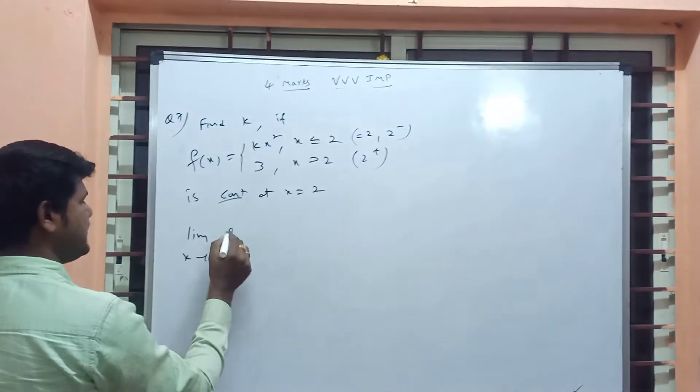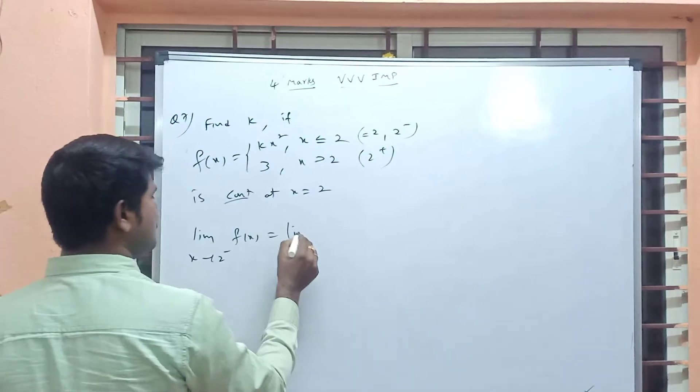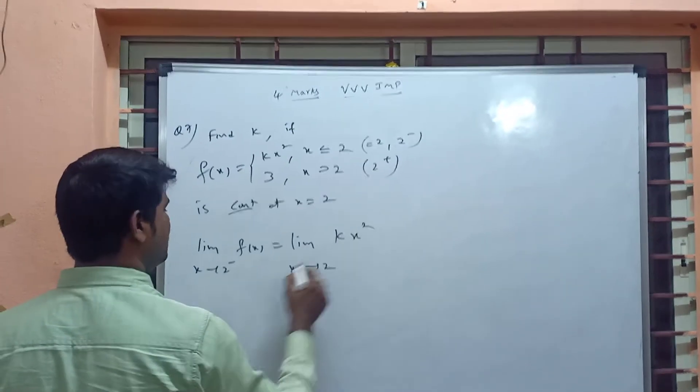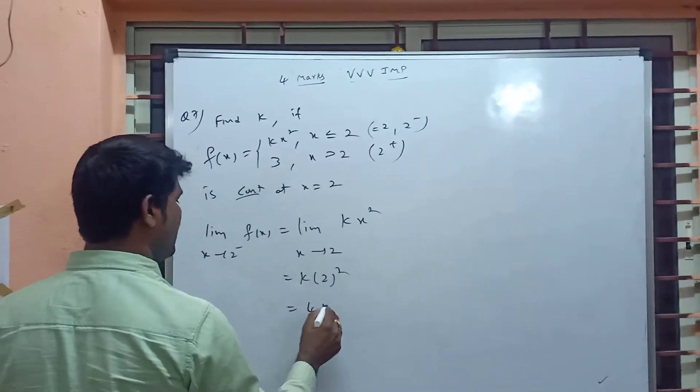Limit x tends to 2 minus f(x). What is the limit x tends to 2 minus? My situation, first function kx square. K into 2 square, 4k.